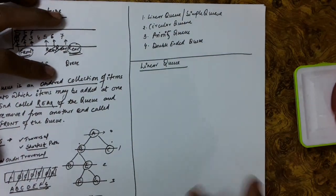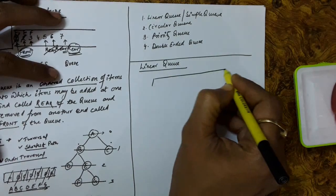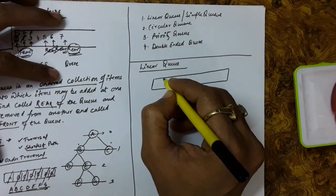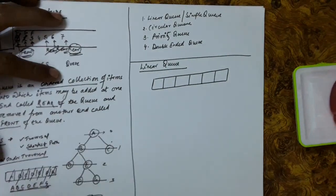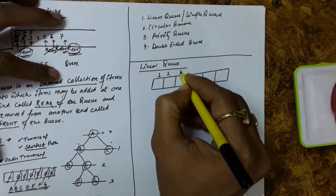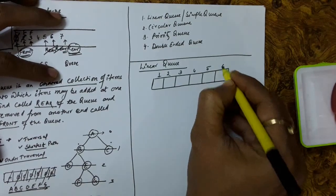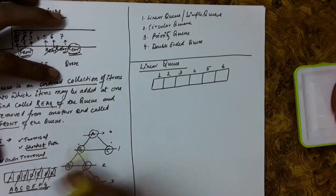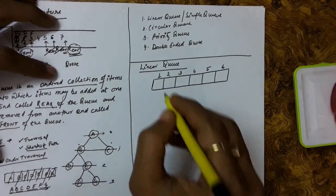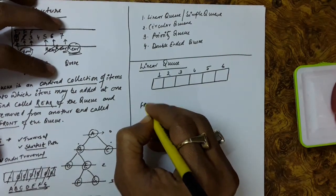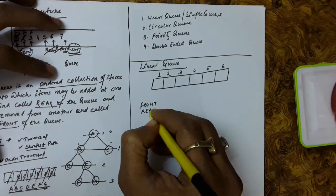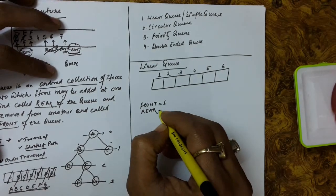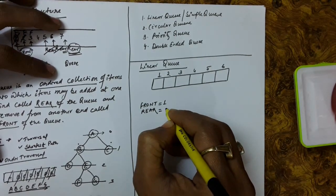For discussing the linear queue, let us suppose we have a fixed-size buffer of size 6, with indexes 1 through 6. We can consider this as an array. There is a front and a rear. The front is assigned index 1 and the rear is assigned index 0 — this is the initialization.